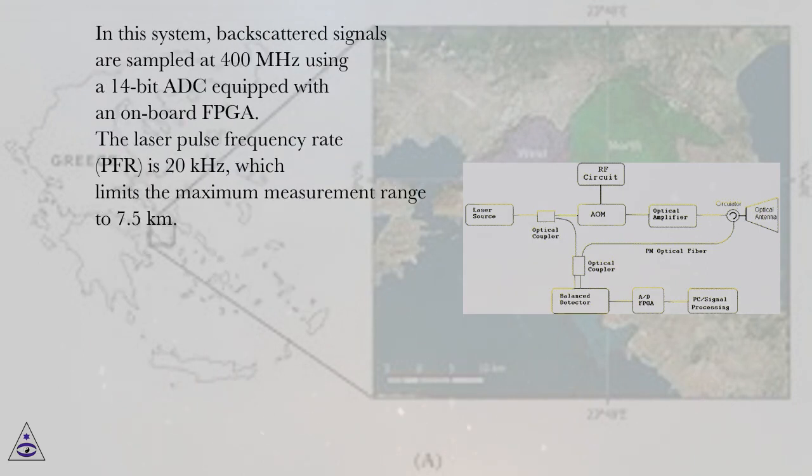In this system, backscattered signals are sampled at 400 MHz using a 14-bit ADC equipped with an onboard FPGA. The laser pulse frequency rate, PRF, is 20 kHz, which limits the maximum measurement range to 7.5 km.